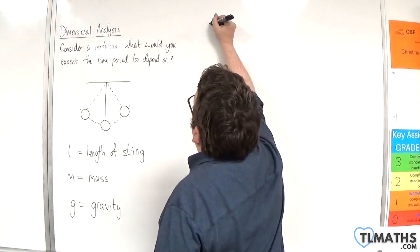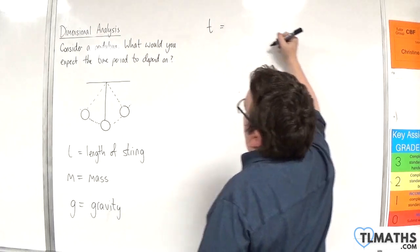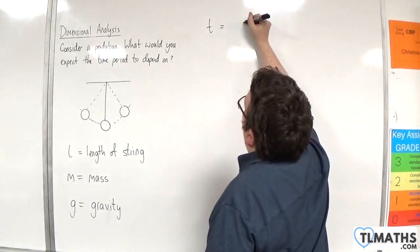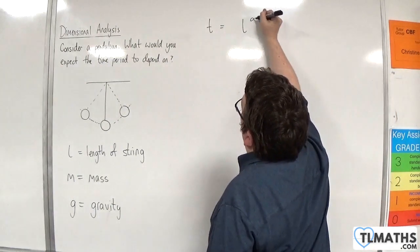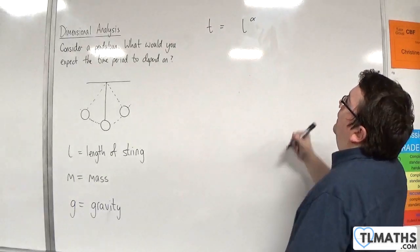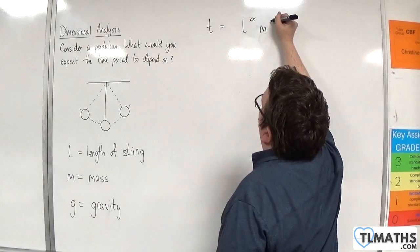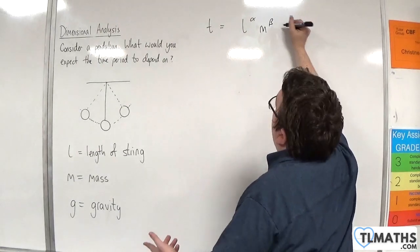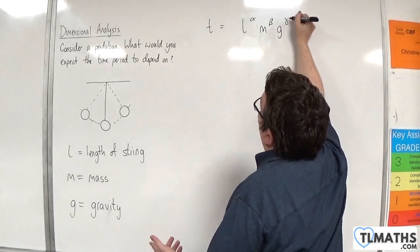We might then say that the time period is equal to L to the power of something, let's call it alpha, times M to the power of something, let's call it beta, and then G to the power of something, let's call that gamma.